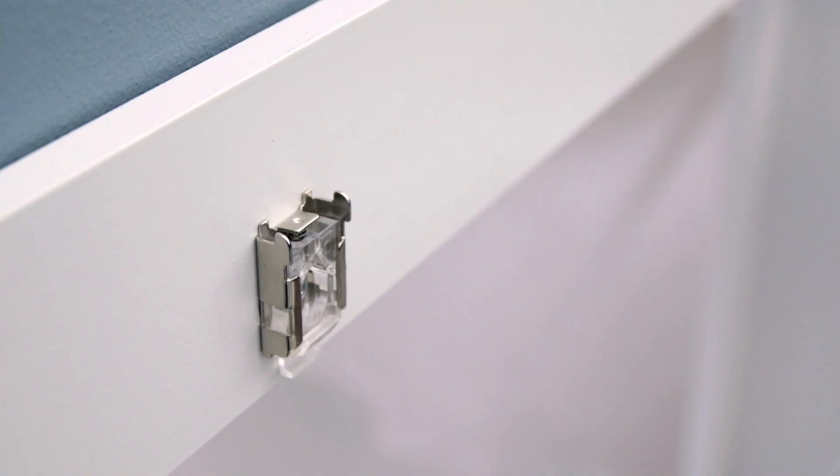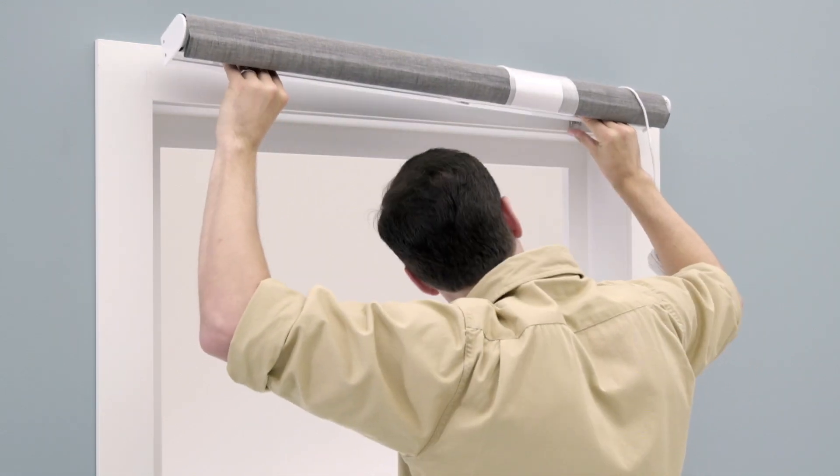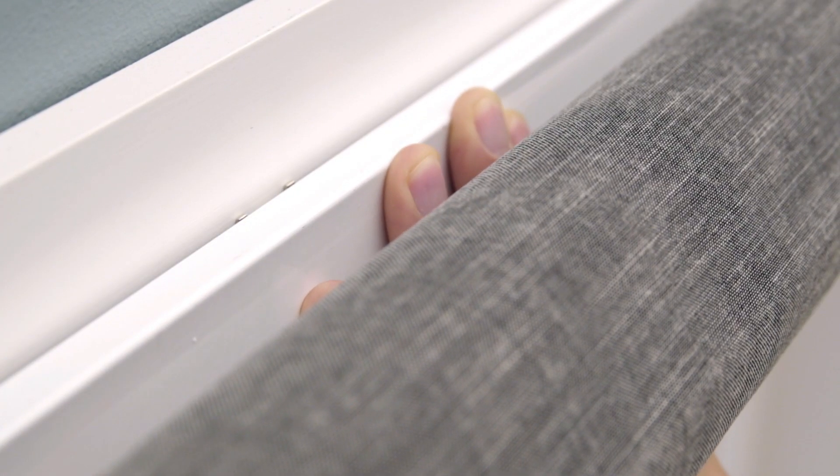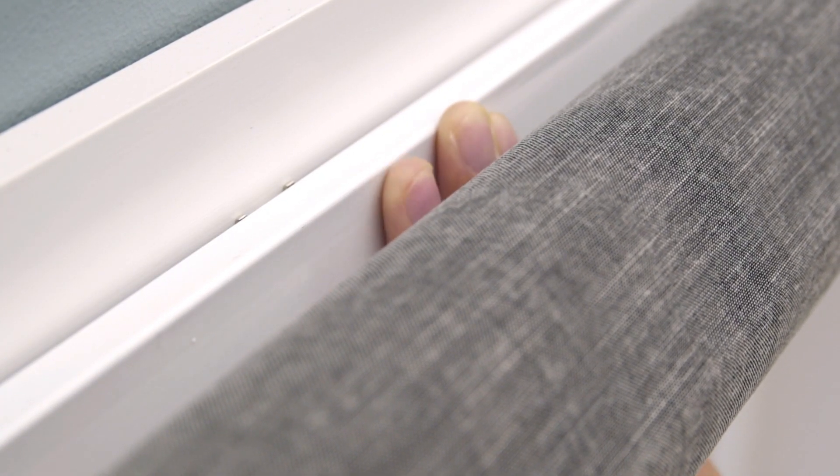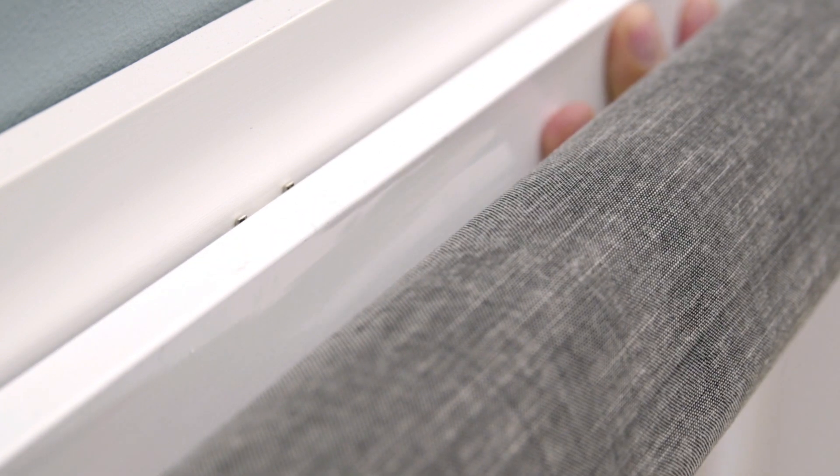Once the brackets are in place, attach the shade by hooking the lip of the shade bar on the brackets and pressing the bottom of the bar into the brackets until it locks into each bracket with an audible click.